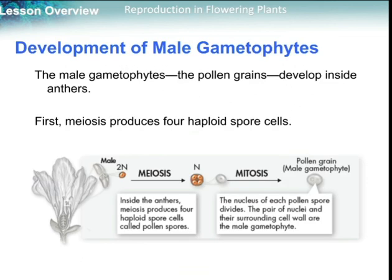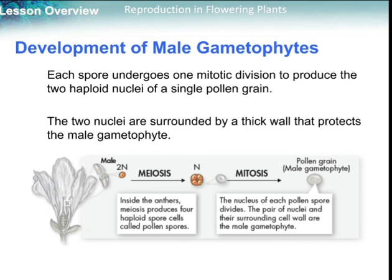Let's start with the development of male gametophytes. The male gametophyte, which is the pollen grain, develops inside the anther. Meiosis produces four haploid microspores. We have two anther cells, and through meiosis they produce four haploid cells. These cells then enter mitosis to produce the two haploid nuclei of a single pollen grain. These four cells produce another four haploid cells, and the two nuclei are surrounded by a thick wall that protects the male gametophyte.